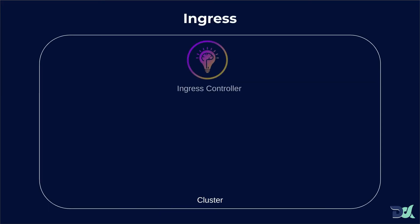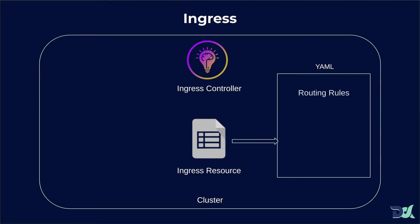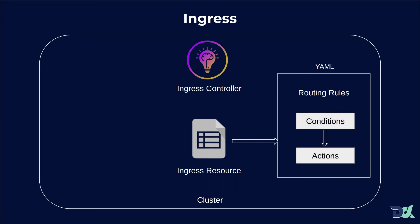Second, after you choose and deploy an Ingress controller, you have to create an Ingress resource file. The Ingress resource file is a YAML file in which we write routing rules. Routing rules are like conditions plus actions — similar to if-else or switch-case in programming. Based on a condition, we take an action: when a request comes in, we send traffic to the backend service target. All these things are written in the Ingress resource file, which is the most important thing. The Ingress controller looks at this file, reads the decisions, and handles the traffic.